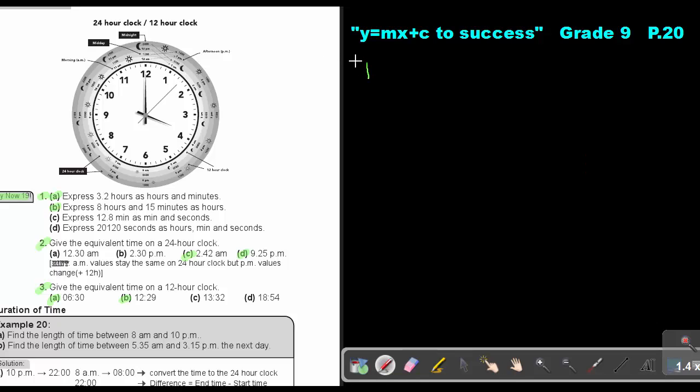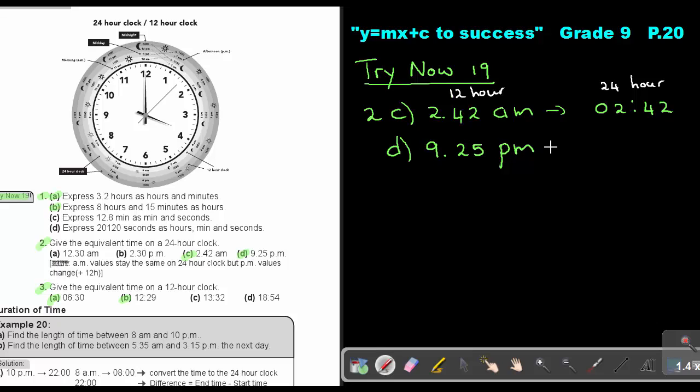We are still with try now 19. And we are at number two, C. Now, this is 2:42 AM. Now, remember if it's AM and I want to go to, this is the 12 hour, let's just mark it. This is the 12 hour clock. And I want to go to the 24 hour clock. So basically I will just keep it the same and say it will be 02:42. It will be exactly the same. If I look at D, but look at D it's PM. So it's 9:25 PM. But if it's PM, I will add 12. So if I add 12, 9 plus 12, I will get 21:25. And I don't write PM or AM.